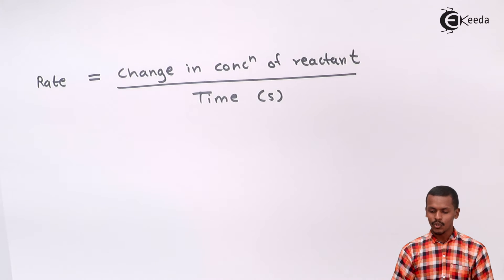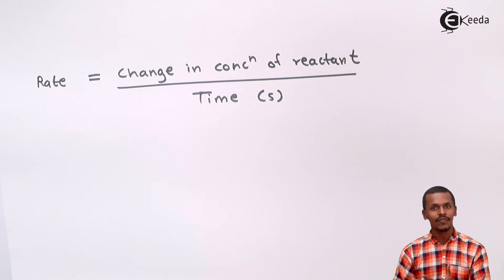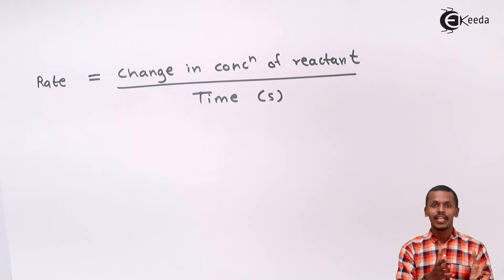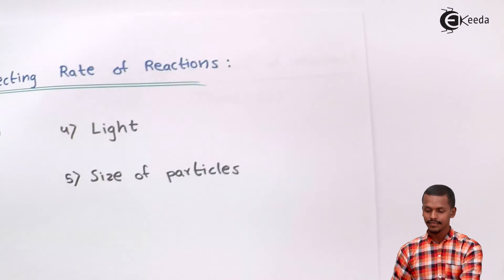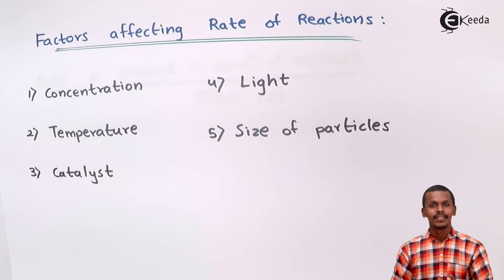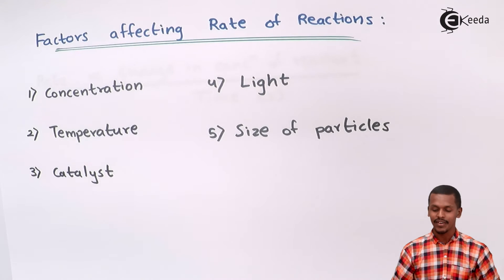Let us move on to what factors affect the rate of reaction, or how the rate of reaction can be increased, which plays a very vital role in performing particular chemical reactions. Talking about the first factor — that is concentration.